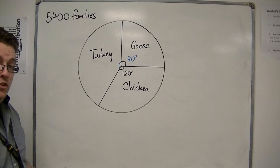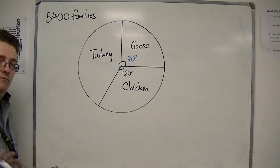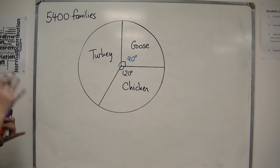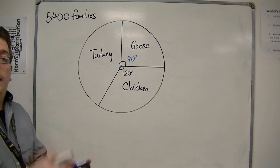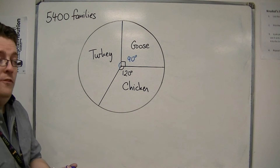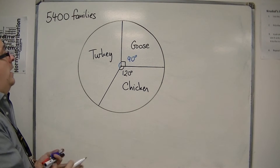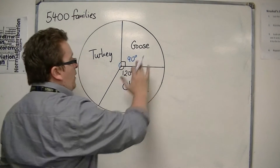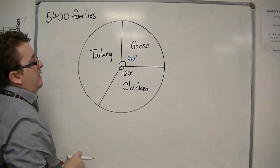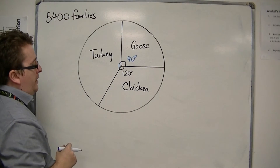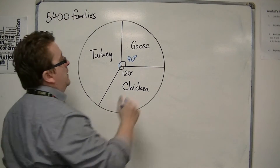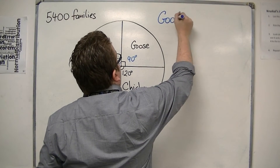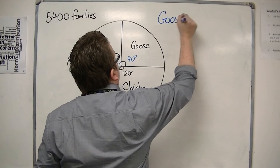The actual question is that we want to know how many families are going to have goose, how many are going to have chicken, and how many are going to have turkey. First up, we're going to look at goose.